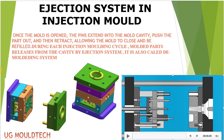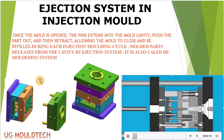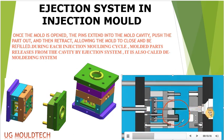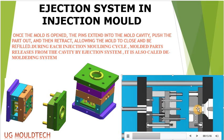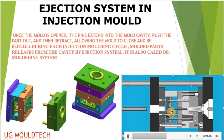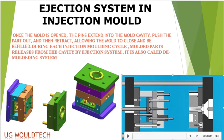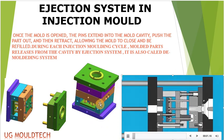Hello friends, welcome to our channel UG Mold Tech. Today we are going to learn about what is the ejection system in injection mold. Once the mold opens, the pin extends into the molding cavity to put the part out. As you can see in the video, the material fills from the machine nozzle and goes through to the cavity. This ejection grid will push out the parts — this is known as the ejection system in injection mold.